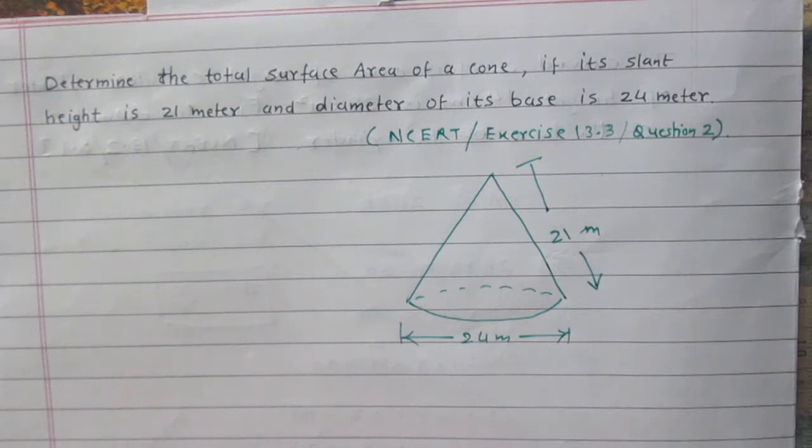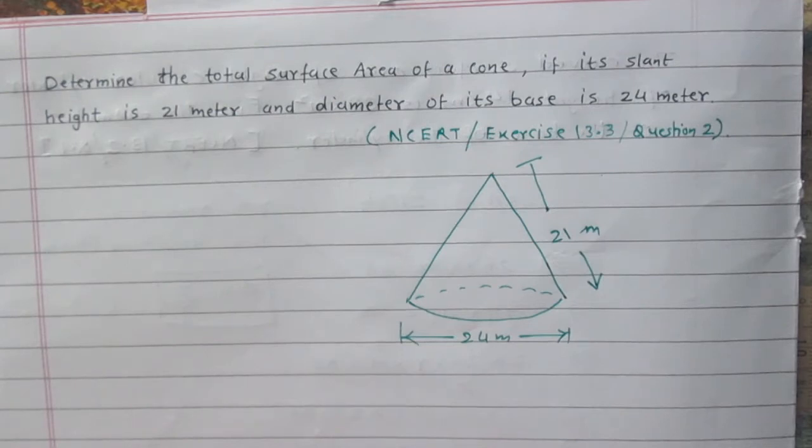Determine the total surface area of a cone if its slant height is 21m and diameter of its base is 24m.